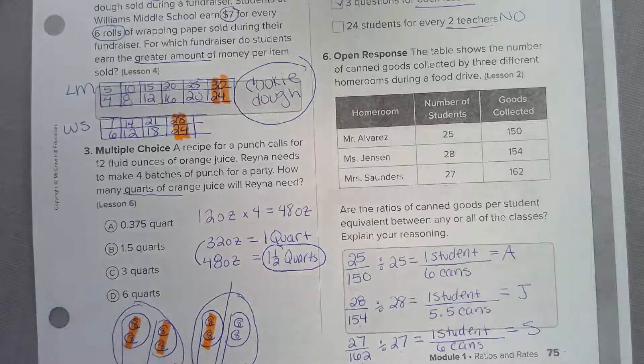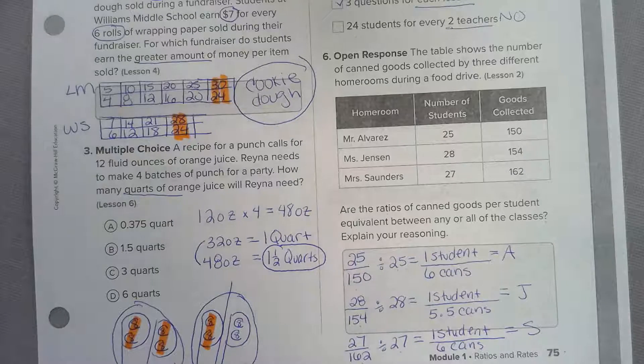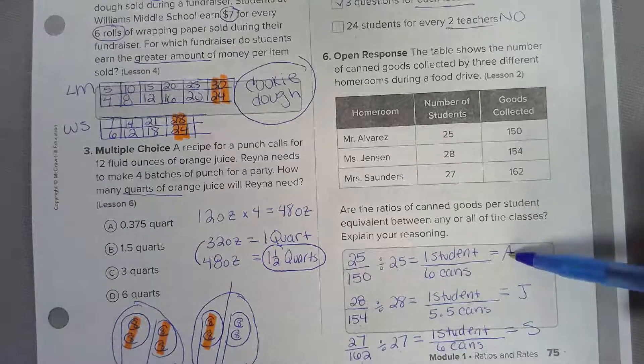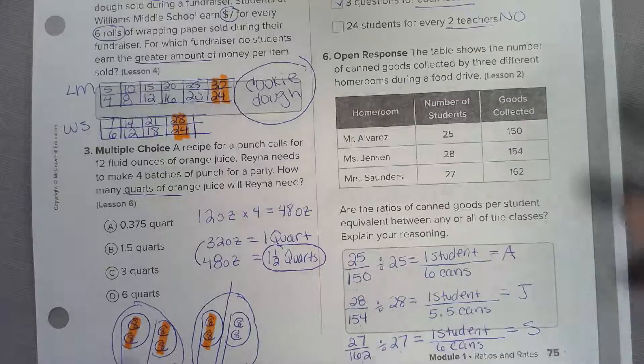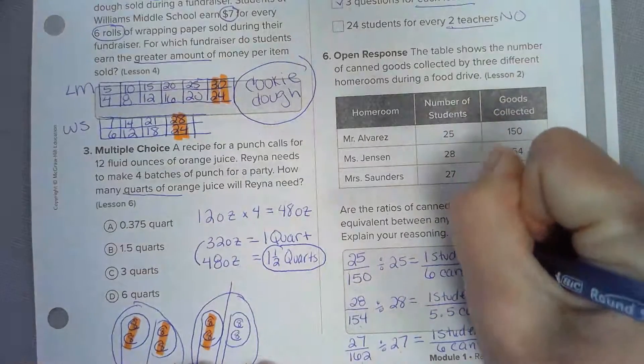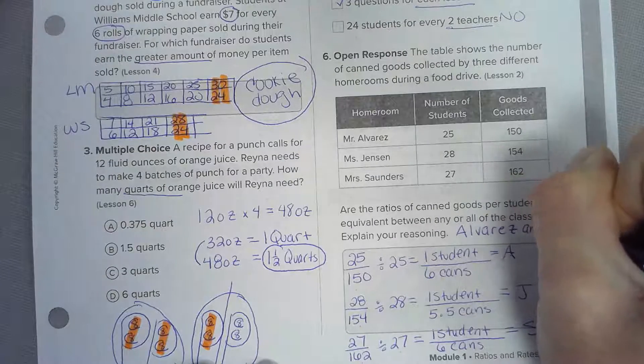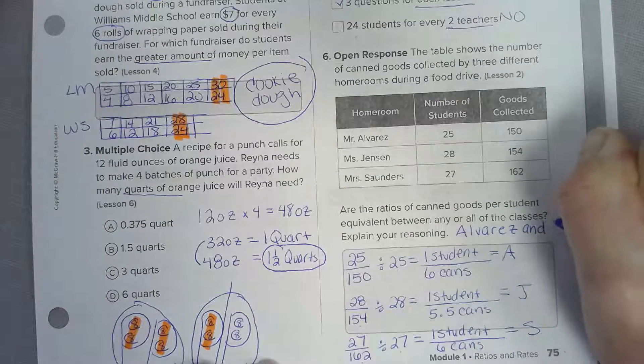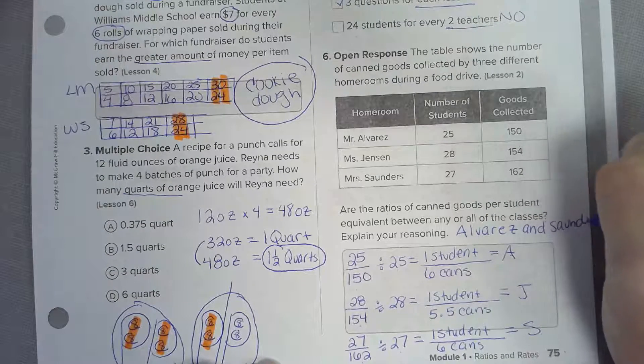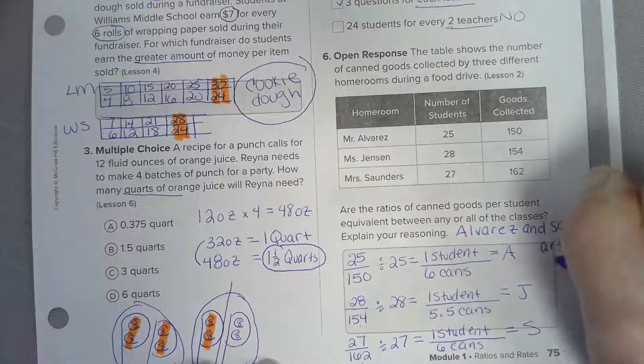So are any or all of the classes equivalent? Mr. A and Mrs. S are equal. Alvarez and Saunders are equal.